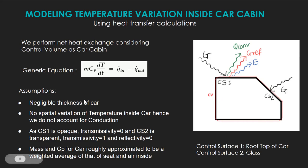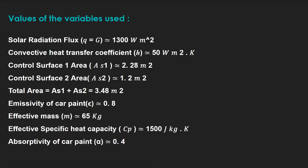The assumptions are that there is a negligible thickness of car. There is no spatial variation of temperature inside car. Hence, we do not account for conduction. Control surface 1 being the rooftop is opaque. Hence, transmittivity is taken to be 0. Control surface 2 is glass and hence, transmittivity is taken to be 1 and reflectivity is taken to be 0. So, mass and Cp for car roughly are approximated to be weighted average of the Cp of seat and Cp of air inside the car. These are the values of the variables which are used in our governing equations.